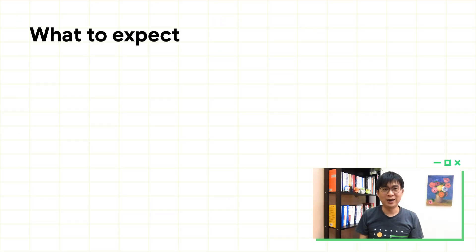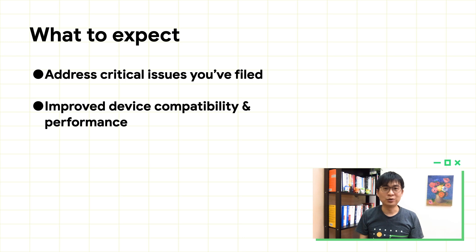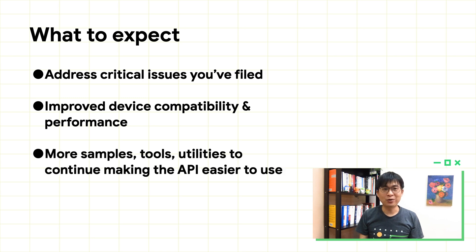Now we have a better understanding of the CameraX beta release. Here is what we are going to do in the near future. First, we are committed to fixing as many issues as we can, and we take reported issues very seriously. So please do file issues in our issue tracker or join our discussion group — we are more than happy to resolve your problems. We will keep investing in our CameraX test lab to improve device compatibility continuously. We also have work in progress to improve CameraX performance, most importantly to reduce the latency of camera opening and taking pictures. And finally, we will keep investigating the pain points of running CameraX apps and bring in more samples, tools, and utilities to make CameraX easier to use.